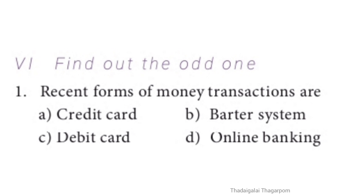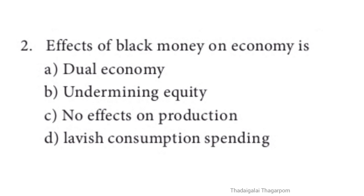Section 6: Find out the odd one. Q1: Recent forms of money transactions are — A. Credit card, B. Barter system, C. Debit card, D. Online banking. The odd one is B option: Barter system. Q2: Effects of black money on economy — A. Dual economy, B. Undermining equity, C. No effects on production, D. Lavish consumption spending. The odd one is C option: No effects on production.